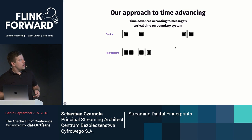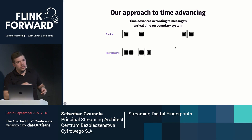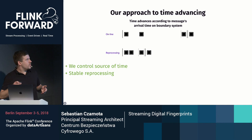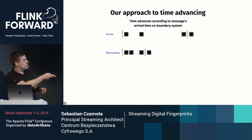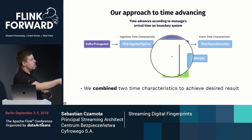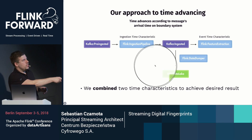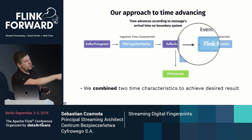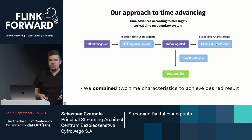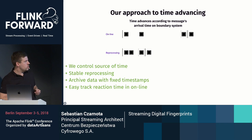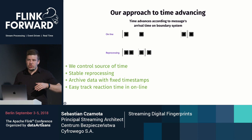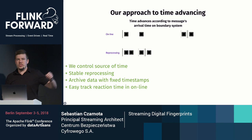Thanks to this approach, we get time operation characteristics similar to event time but without dependency on external clocks. We control the source of time, we have stable reprocessing, and we store data with fixed timestamps. When we do reprocessing, we just change the direction of the data flow, feed data backward, and do reprocessing in the same feature extraction phase — there is no difference in operation. It's also very easy to track reaction time online because it is computed as current system processing time minus ingestion time from the boundary system.